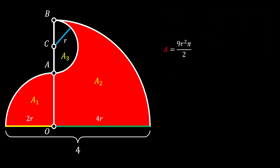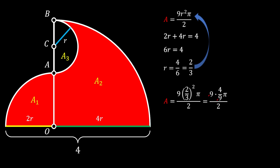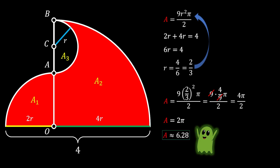From our sketch we can clearly see that the sum of the radii of the big and the small quarter circle must be equal to 4. Therefore 6r must equal 4, and that means r equals 4 over 6, which equals 2 over 3. Now we can plug this value back into our equation. We can simplify and cancel both 9s, and we get that our area equals 4pi over 2, meaning our red shaded area equals 2pi, or approximately 6.28 square units. So again we got our solution.